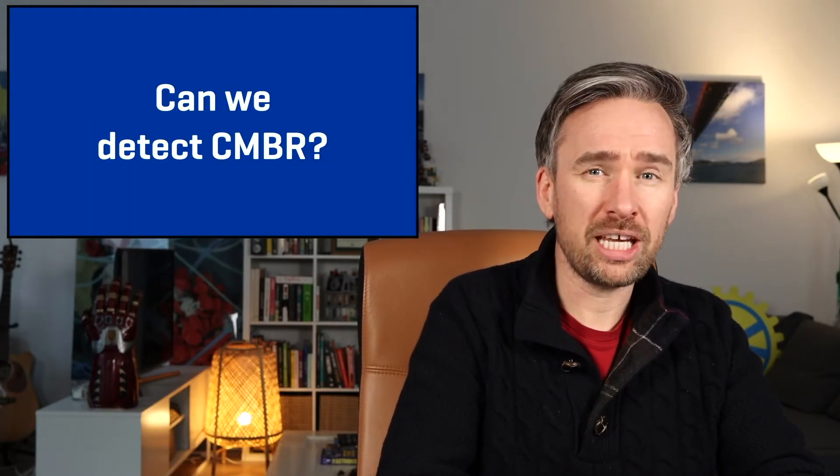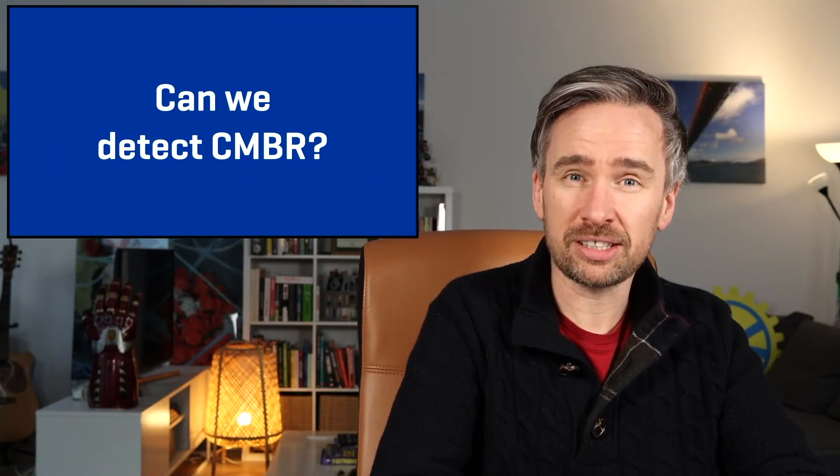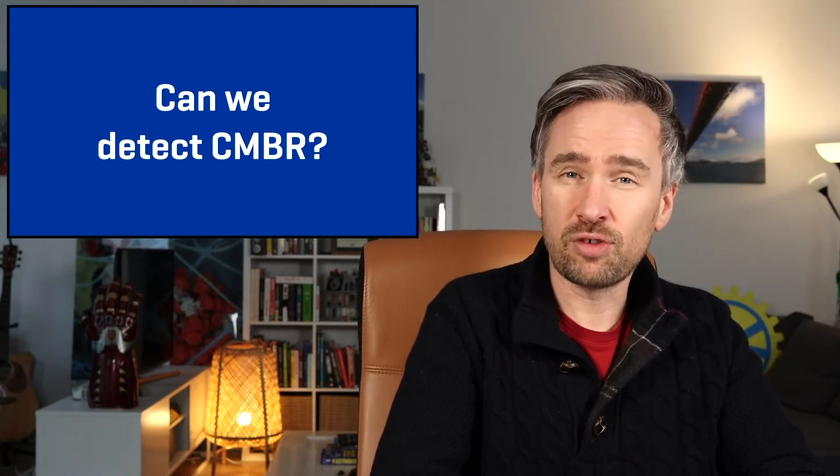Microwaves can be seen as a form of radio waves. When I talk about microwaves I'm not necessarily referring to microwave ovens, although the wavelengths used in microwave ovens are in the range of microwaves on the electromagnetic spectrum. Can you actually detect the cosmic microwave background radiation? You can, and what you need is one of those old cathode ray tube TVs. If you turn it on and it's not tuned to a channel, you'll see something that looks like static noise, and approximately one percent of that signal is coming from the cosmic microwave background radiation.